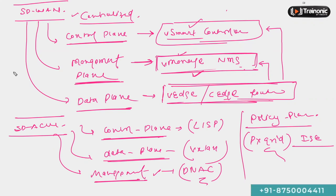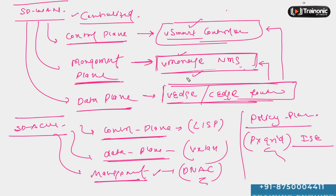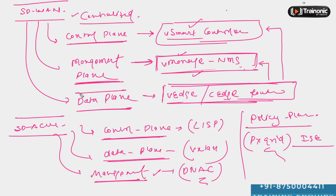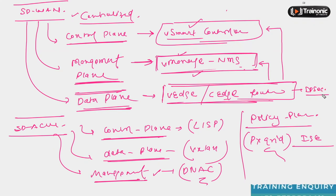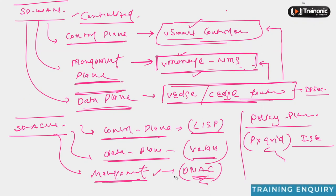In summary, software-defined networking overcomes the challenges of distributed architecture. Rather than configuring protocols like OSPF on every device one by one, we have a centralized control plane. Rather than managing every device individually, we have centralized management via vManage. Secure data plane communication between edge devices is provided by IPsec. In SDA, the control plane is based on LISP, the data plane on VXLAN, and the management plane on the DNA Center hardware appliance.